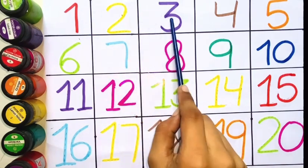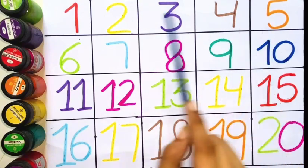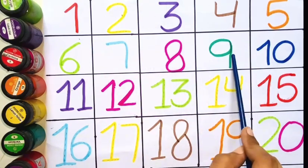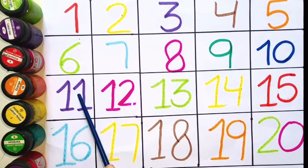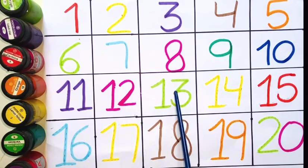One, two, three, four, five, six, seven, eight, nine, ten, eleven, twelve. Thirty, forty, fifty, sixty, seventy, eighty, ninety, twenty.